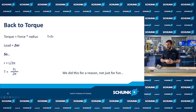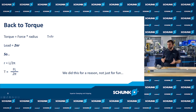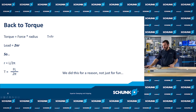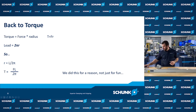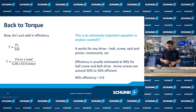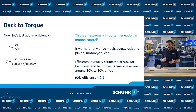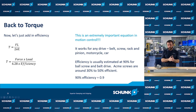Now we put it all together — this is actually deriving the equation. You have your simple torque equation: torque equals force times radius. We know that lead equals 2π times radius, so solving for radius, we divide both sides by 2π, giving us radius equals lead over 2π. We plug that into the torque equation and get: torque equals force times lead divided by 2π. We did that for a reason — not just for fun. We've derived an equation based on a belt drive, but it works for anything: a ball screw, rack and pinion, a motorcycle or a car. Anywhere you have a motor generating torque and causing something to move linearly, this equation works. It's a really powerful equation.